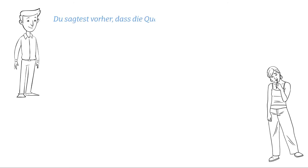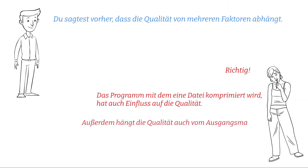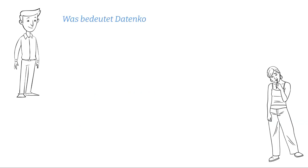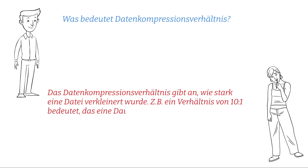Du sagtest vorher, dass die Qualität von mehreren Faktoren abhängt. Richtig! Das Programm, mit dem eine Datei komprimiert wird, hat auch Einfluss auf die Qualität. Außerdem hängt die Qualität auch vom Ausgangsmaterial und verschiedenen Einstellungen ab. Auch das Datenkompressionsverhältnis spielt eine Rolle. Das Datenkompressionsverhältnis gibt an, wie stark eine Datei verkleinert wurde. Zum Beispiel, ein Verhältnis von 10 zu 1 bedeutet, dass eine Datei 10 mal kleiner als unkomprimiert ist.